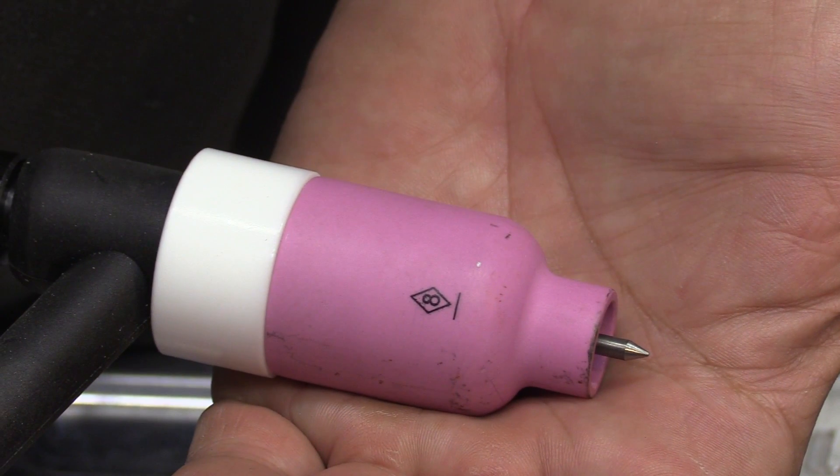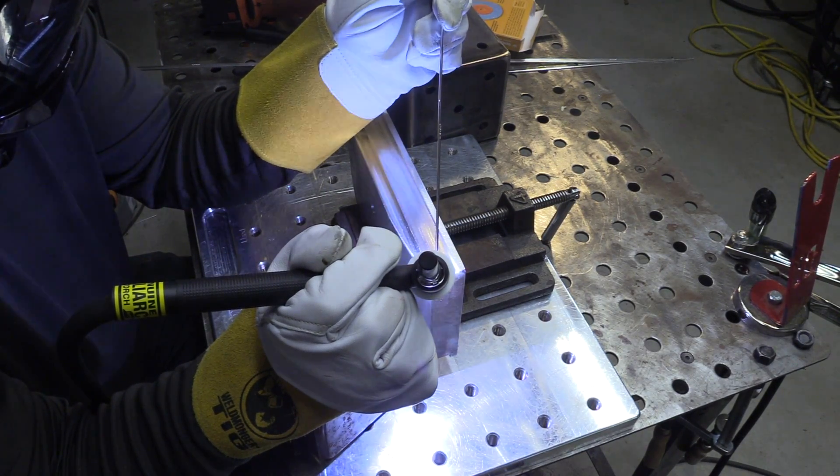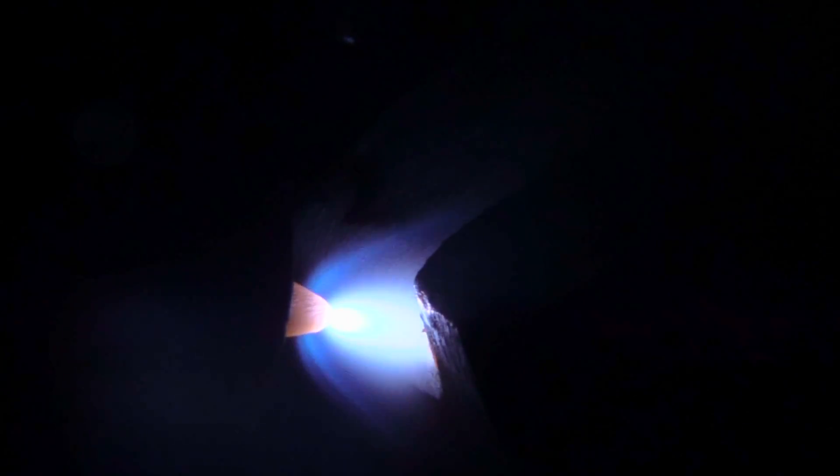A number eight cup here. Normally, I would probably use a number six for aluminum, but again, I want that wider cleaning action because I'm sort of treating this like it was a casting. And it's kind of welding nasty like it was a casting. This is what I would do. I would do a little cleaning pass like this. Kind of sneak up on it. Let the thing puddle nice and cleanly. Make sure it puddles cleanly before I give it much amperage at all.